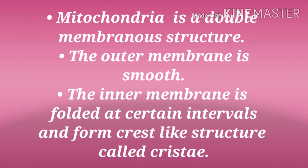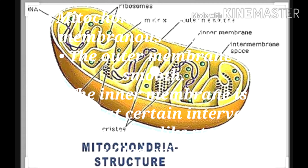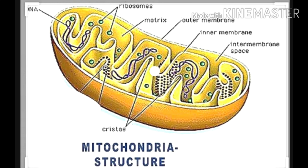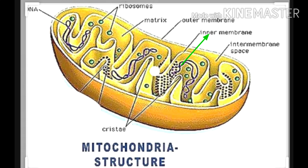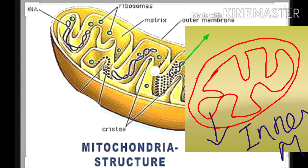Mitochondria is a double membranous structure — double membrane means it is made up of two membranes. The outer membrane is smooth and the inner membrane is folded at certain intervals and forms crest-like structures called cristae. This should be clear from the diagram. You can see that this is the outer membrane, which is smooth, and the inner membrane is folded at certain intervals to form crest-like structures.